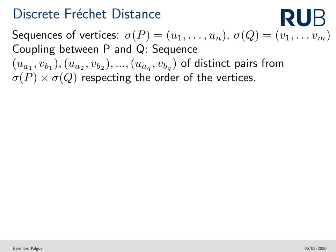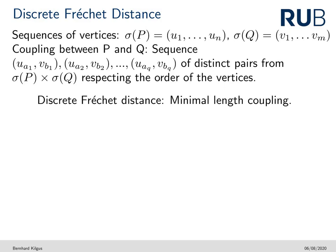The discrete Fréchet distance approximates the Fréchet distance, and in this setting we only consider positions where the endpoints of the leash are located at vertices. Formally, it is defined by a minimum length coupling between the vertex sets. A coupling is a sequence of distinct pairs from the vertex sequence of p and the vertex sequence of q that respects the order of the vertex sequences. The length of a coupling is the maximum distance between two points of a pair in this sequence, and the discrete Fréchet distance is the minimum possible length of such a coupling.